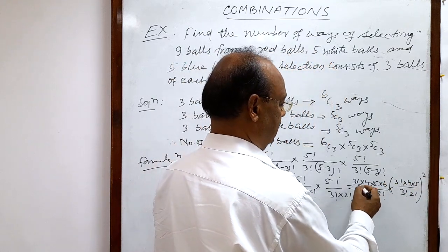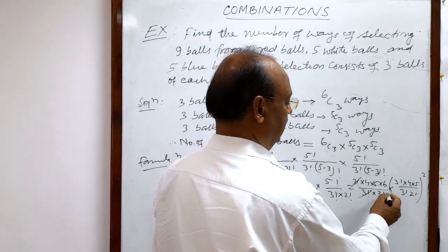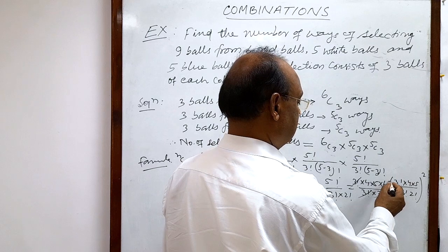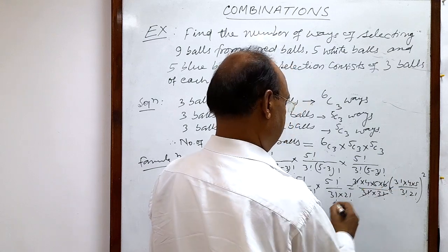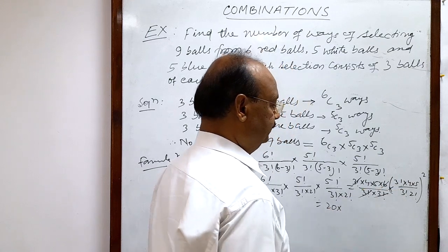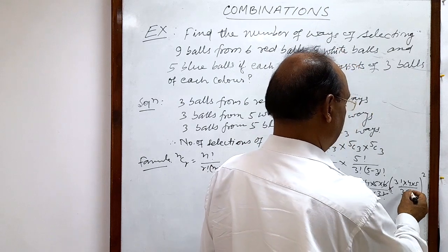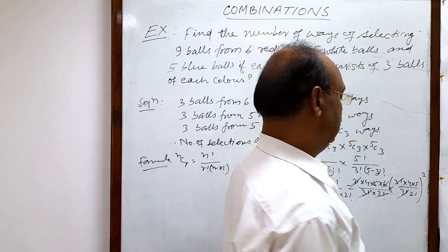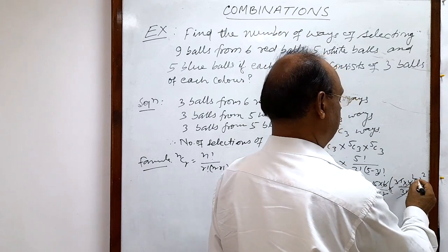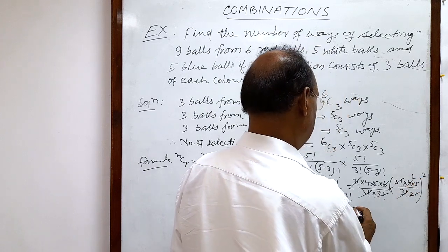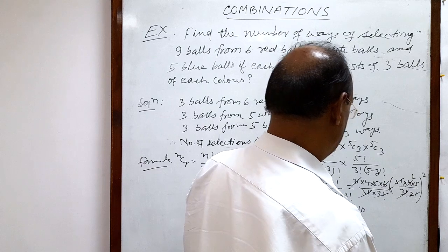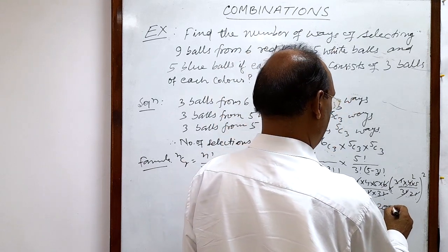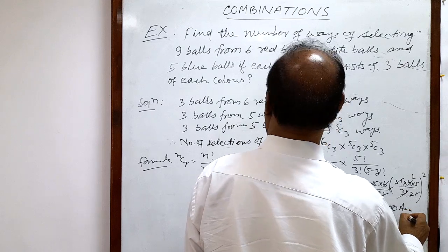Let us simplify. The 3! cancels out — 3! means 1 × 2 × 3 = 6, which cancels here, giving us 20. Then 3! cancels out again, and 2! = 2, giving us 10. So we get 10, and again 10 — that is 10 × 10 = 10² = 100, multiplied by 20, giving us 2000. By multiplying all these numbers, we are getting 2000. This is the answer.